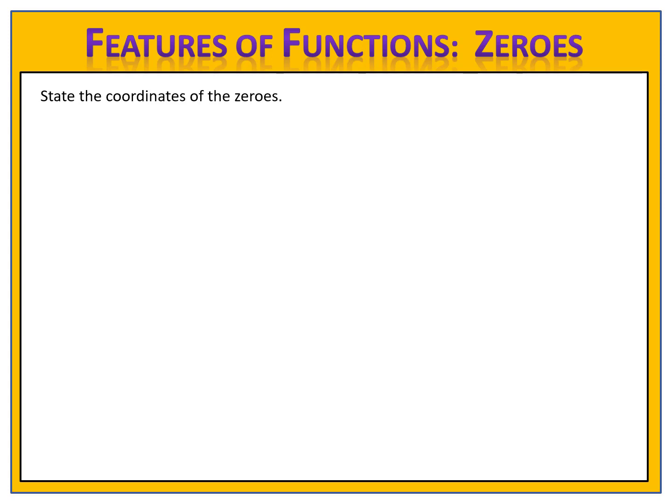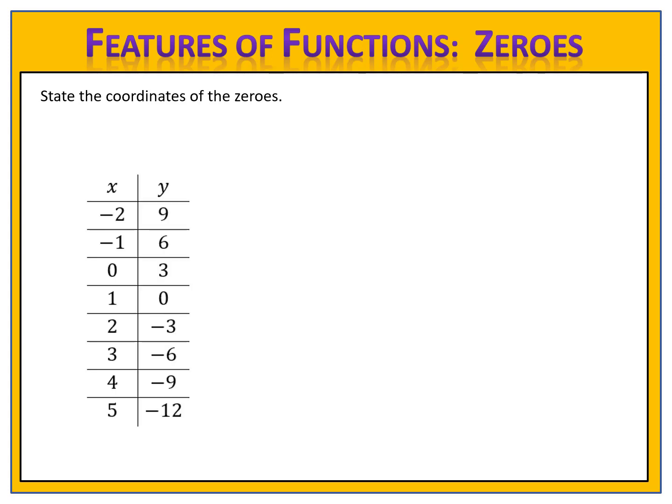Here's one last exercise. We have an input and an output table. We look in the output column and look for the output of zero. That happens in only one place for this function. The input is one and the output is zero, meaning we have a zero at the point (1, 0). That is the zero of the function.